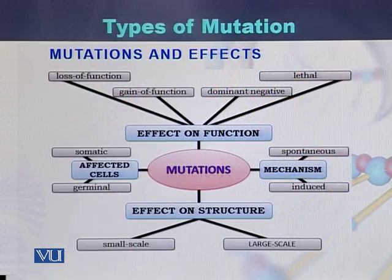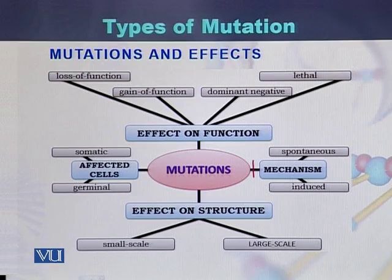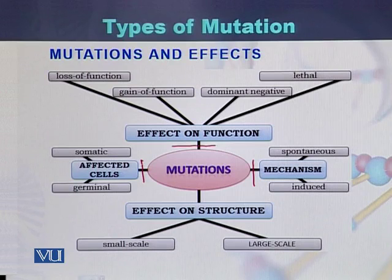If we study in detail what mutation is, what their effects are, and how mutations are classified, there are four main patterns by which mutations can be classified: based on the mechanism, based on the effect of the mutation, based on the affected cells, and based on the effect on structure.